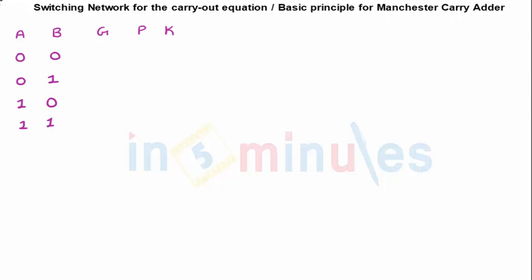We have already seen that this switching network for the carry-out equation, we can easily predict our carry if we know our generate, propagate, or the kill signal. So we will be drawing this basic network on generate, propagate, and kill signals and see whether my carry-out functionality is achieved or not.